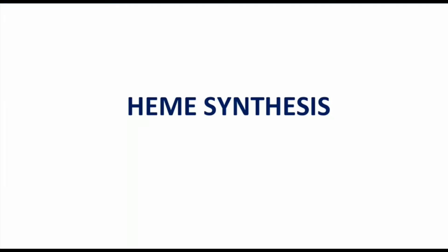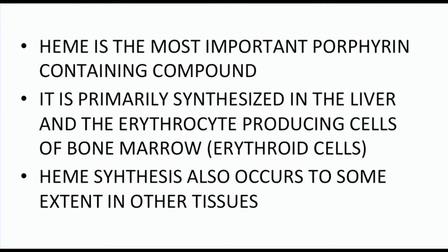Today we will be discussing heme synthesis and how it takes place inside our body. Heme is considered to be the most important porphyrin-containing compound. Heme is the non-protein part of hemoglobin, which resides inside the red blood cell and helps in the transportation of carbon dioxide and oxygen in our blood.